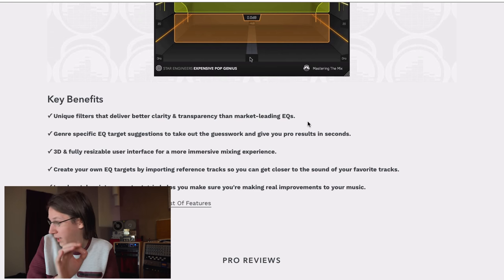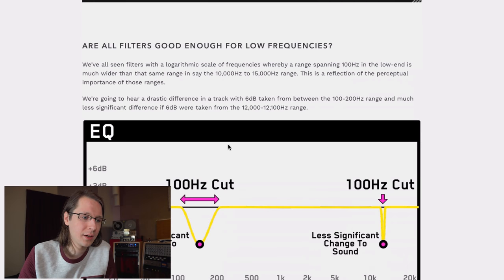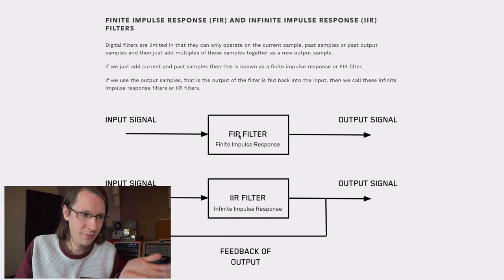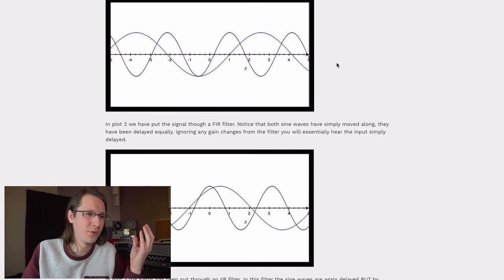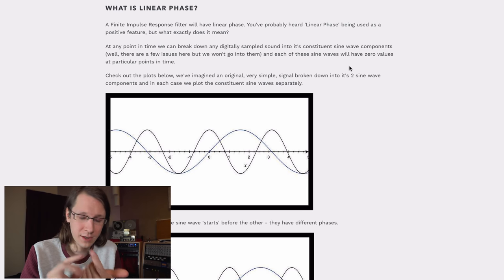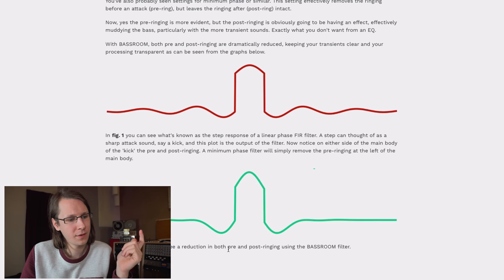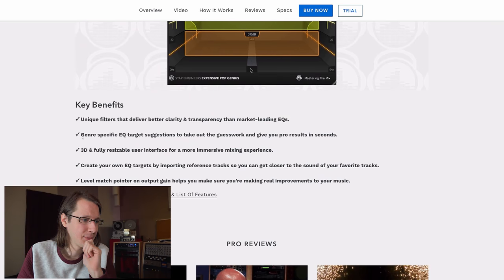The key benefits include unique filters that deliver better clarity and transparency than market-leading EQs. This got me thinking, so I asked them about it. They sent me a link to a blog post — which I'll link below — that explains the difference between FIR (finite impulse response) and IIR (infinite impulse response) filters, and how they handle time alignment distortion with linear phase filters versus phase alignment distortion. As far as I understand, they've developed their own technique — not strictly FIR or IIR — with less pre and post ringing, more precision, and without the time-alignment weirdness of linear phase.